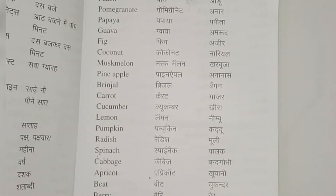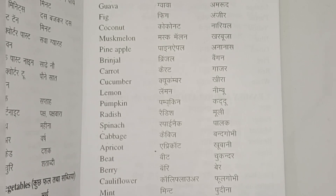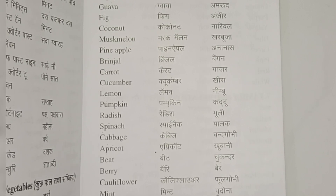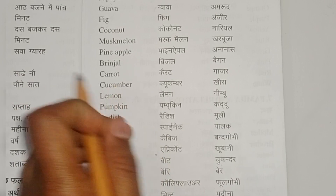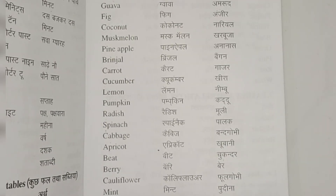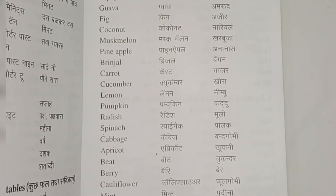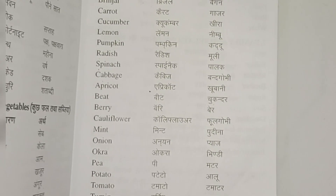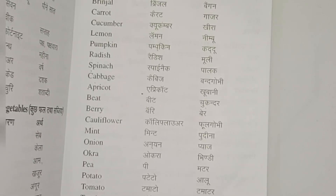Lemon — Nimbu. Pumpkin — Kaddu. Radish — Mooli. Spinach — Palak. Cabbage — Bandgobi.